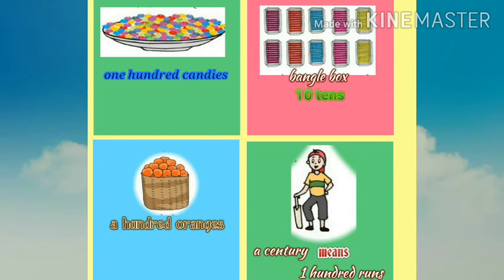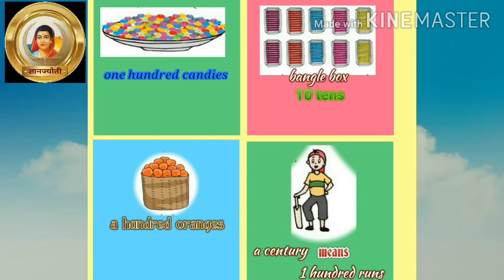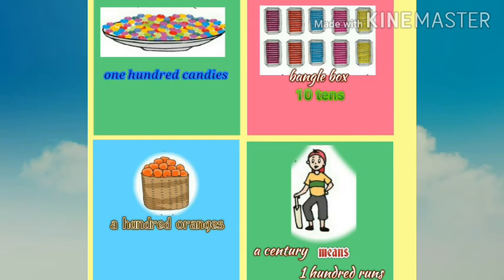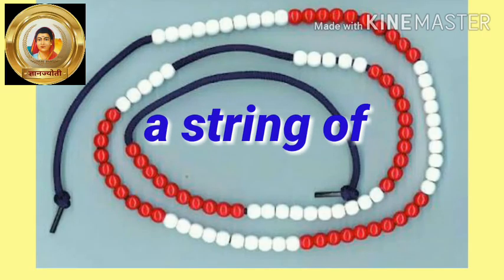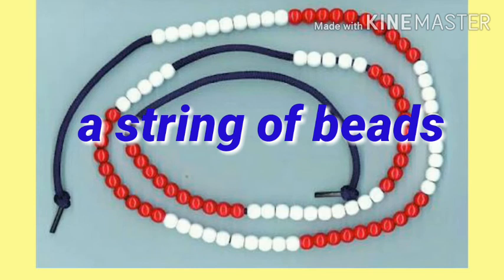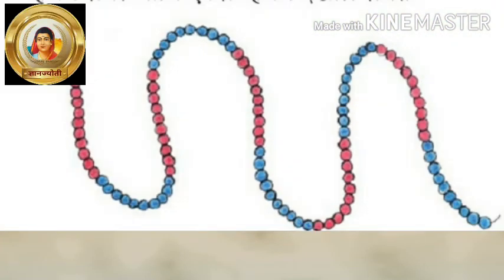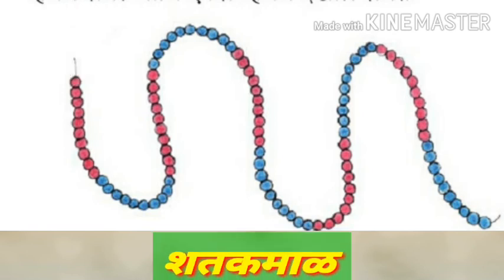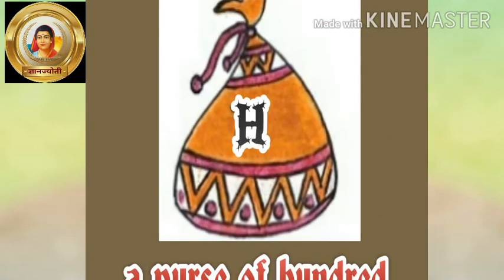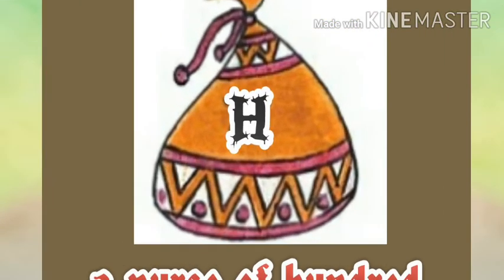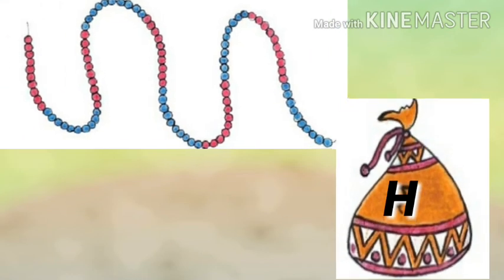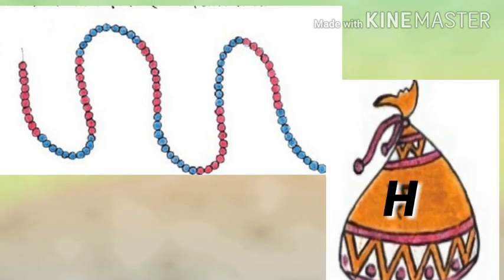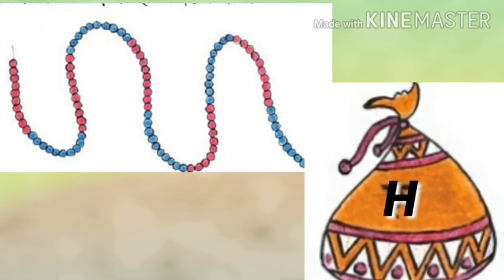So students, you have seen all the pictures. What did you find? That all of them have the same number of things - manje ata aapan sarva chitra bagitli. Ata aapat kaai samaj le? Sagi an madhe where is a stock - a purse of beads, means shatak maal. Yaa maalye madhe shambar mani ahet - there are 100 beads in this necklace. Aani haa shatak batwa ahet - a purse of hundred. Manje tiyaa maalye til mani kaadho niya batwa ya taakle ahet, manun to shatak batwa ahet.